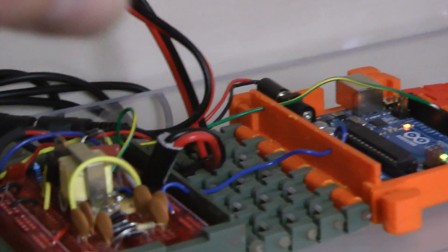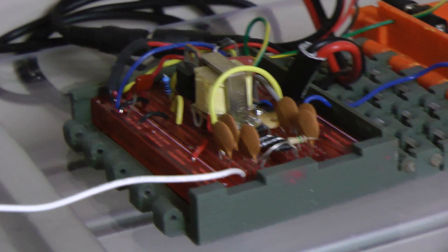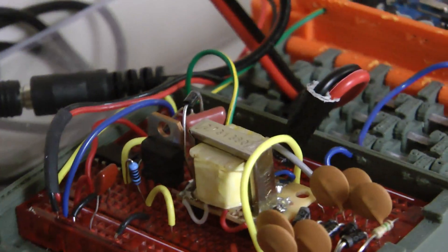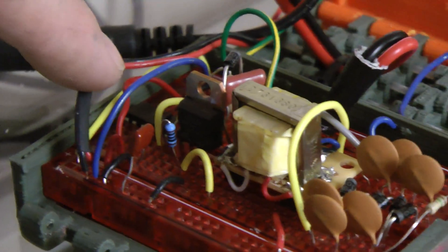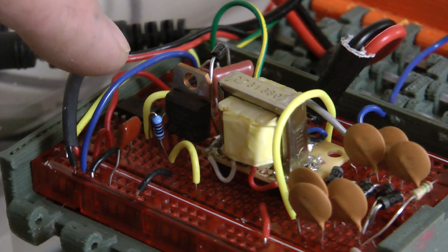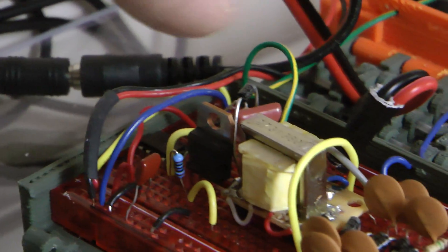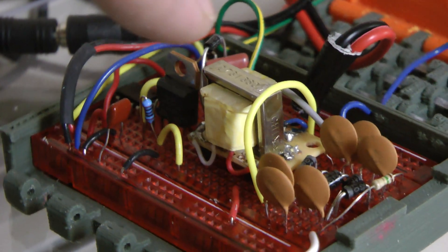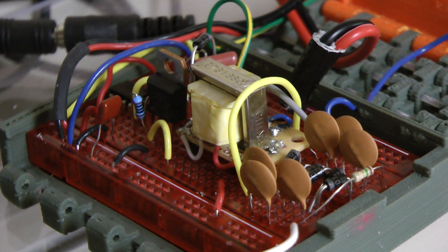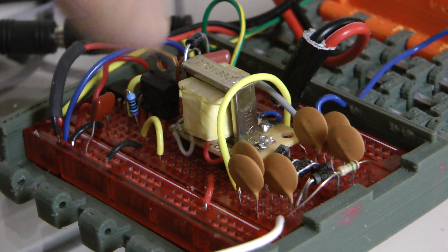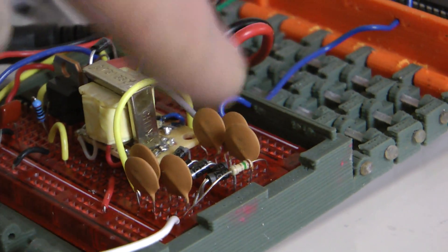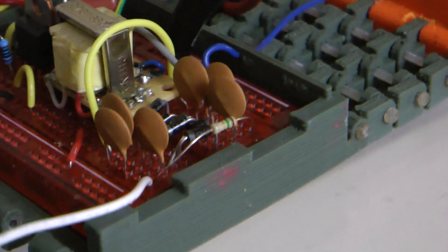So the Arduino sends a pulse, a 20 millisecond pulse, over to an opto-isolator chip, which is right there. And that turns it on and off at 20 milliseconds and then sends the power going through the transformer. The transformer takes DC current, converts to AC current, and stores it in these capacitors.